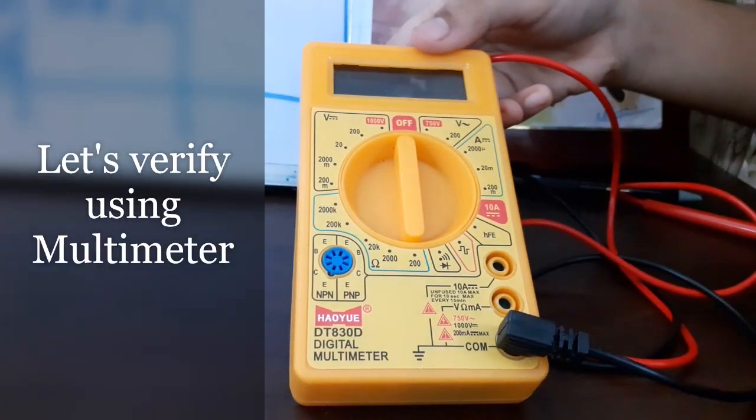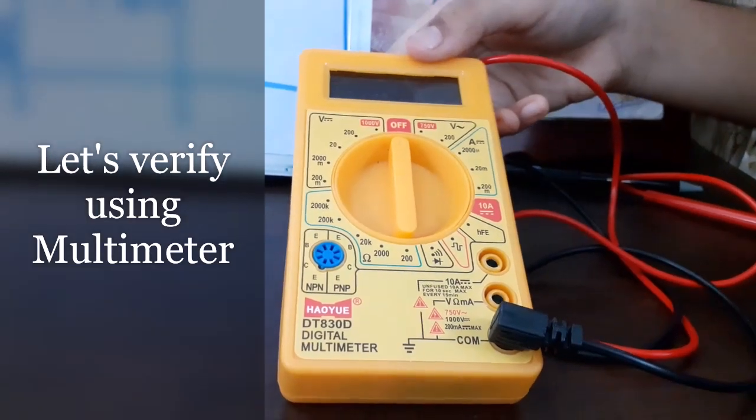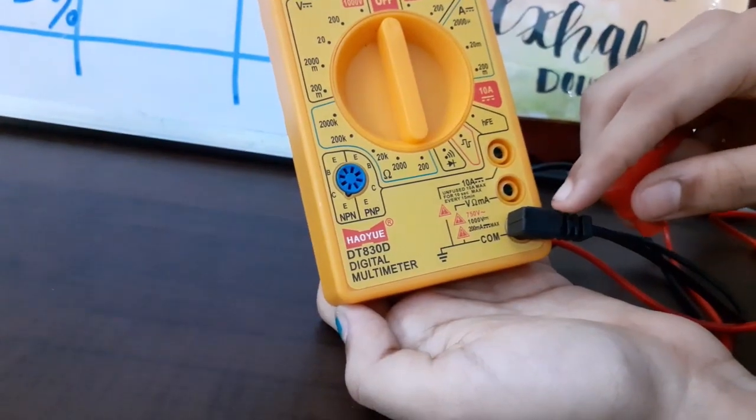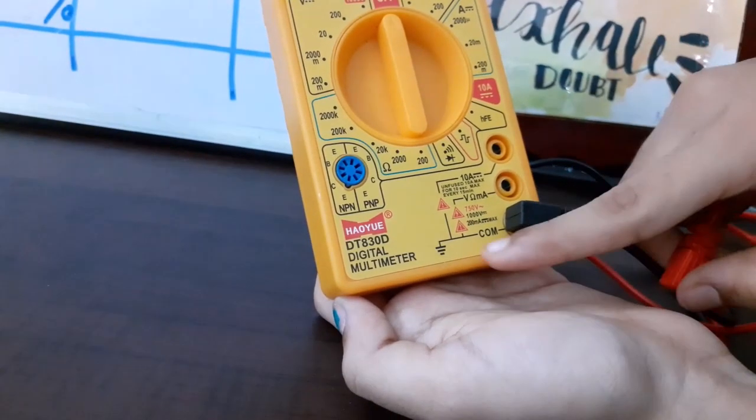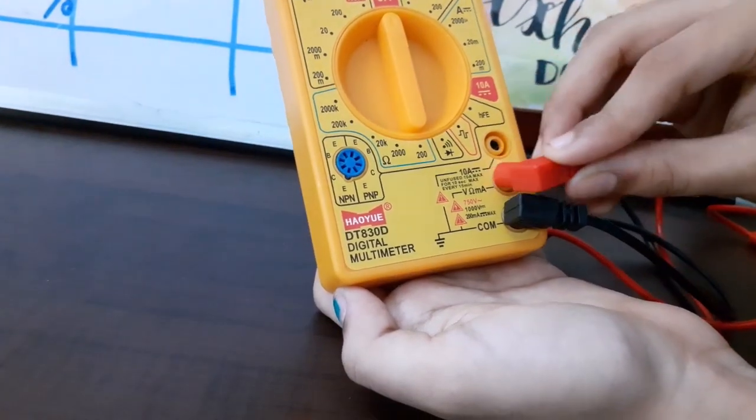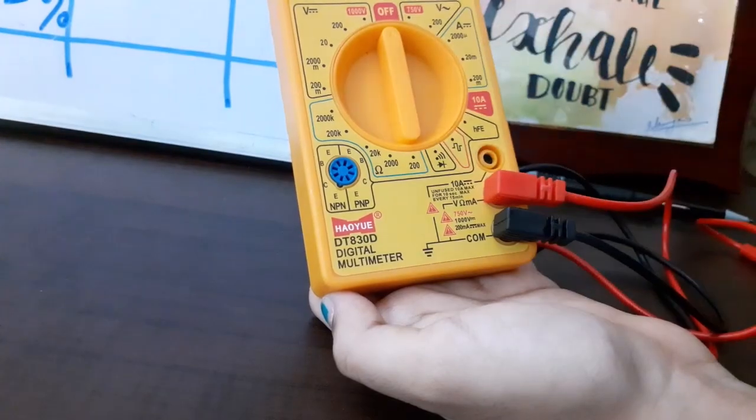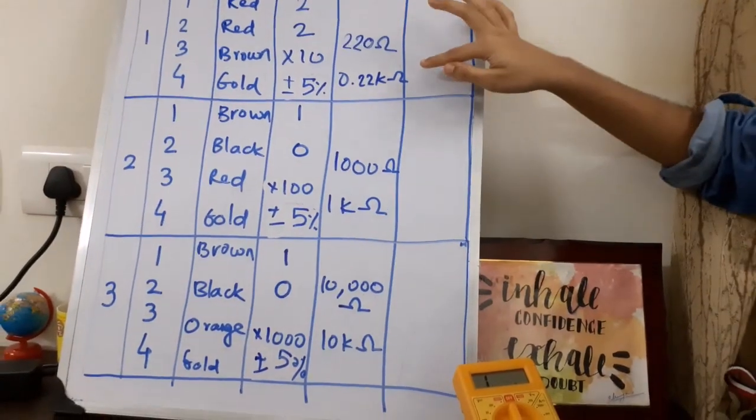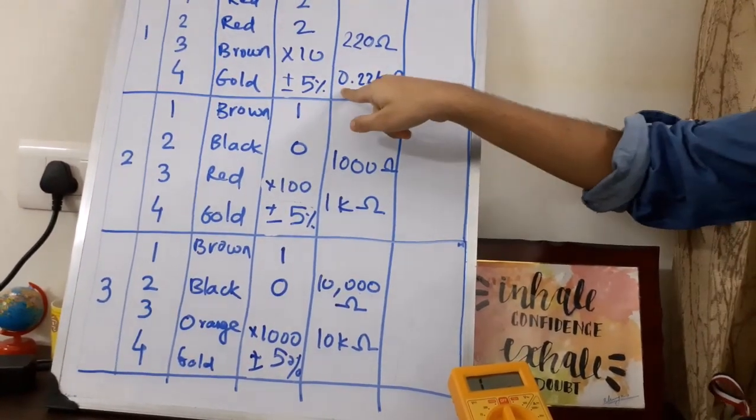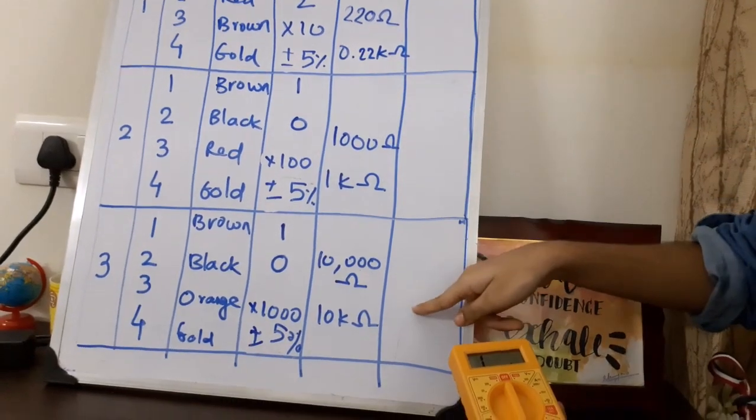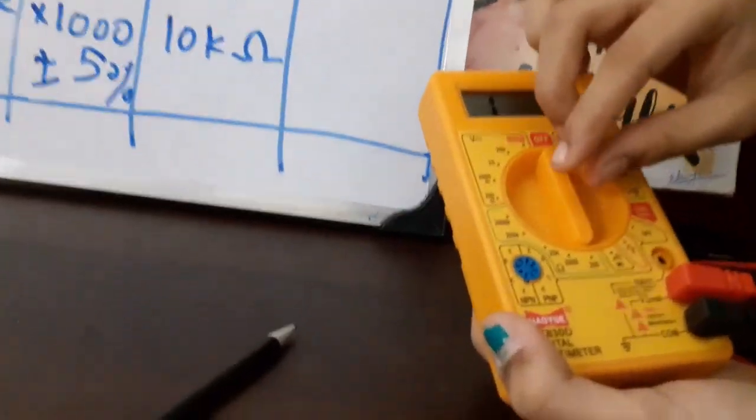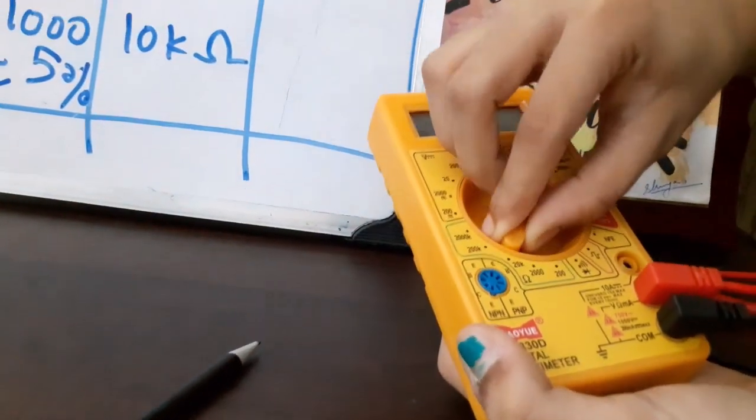You have to use a multimeter to measure the resistance. For that, you have to insert the black pin to the ground and the red pin to the second slot, which is for resistance. Since our values of resistance are from 0.22 K to 10 K, I will set it to 20 K tab.